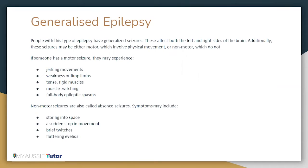What is generalized epilepsy? People with this type of epilepsy have generalized seizures which affect both the left and the right sides of the brain. These seizures may be either motor, which involve physical movement, or non-motor, which do not. If someone has a motor seizure, they may experience jerking movements, weakness of the limbs, limp limbs, tense or rigid muscles, muscle twitching, and full body epileptic spasms.